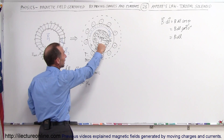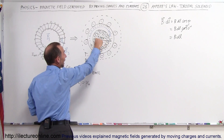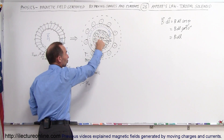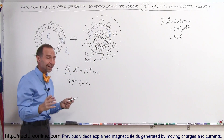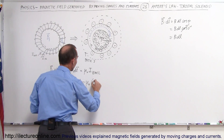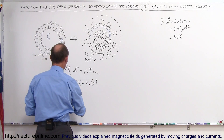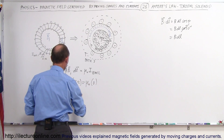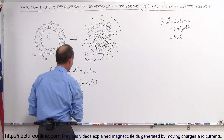The problem is that when we integrate around the inner path, there is no current whatsoever enclosed, so that equals zero, which means B1 must be equal to zero.